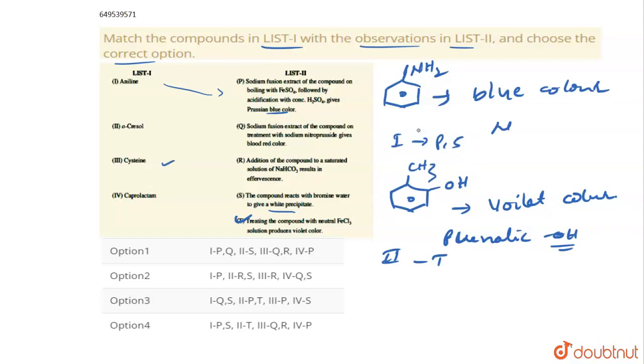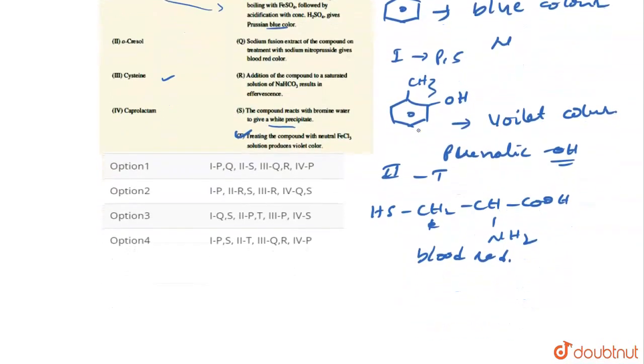Next, coming to third one, they are given cysteine. So cysteine formula is HS-CH2-CH-COOH, and here it's attached with NH2. This is cysteine. So cysteine gives blood red color with NASCN. Blood red color it gives with NASCN.